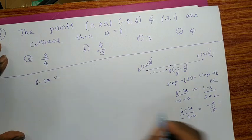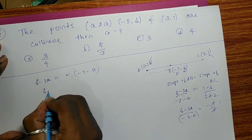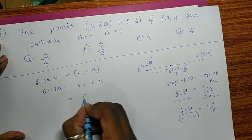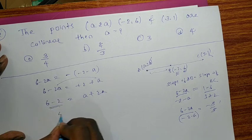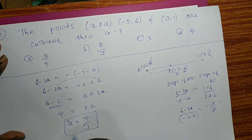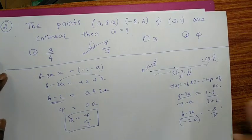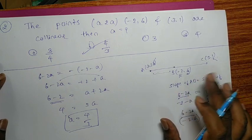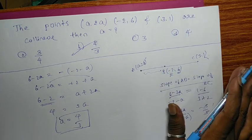Both cancel to -1. So 6 minus 2a equals minus of -2, which simplifies to 6 minus 2a equals plus 2. Mathematically, minus times minus is plus. Simplification: 4 equals 3a, so a equals 4 divided by 3. Check the options. This is correct. So the collinear points condition is slope AB equals slope BC.